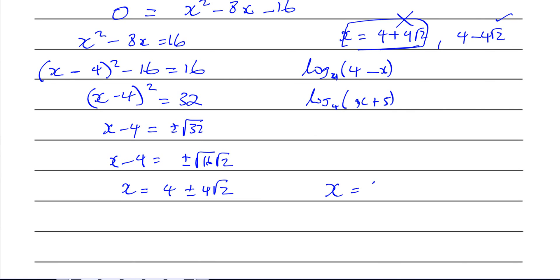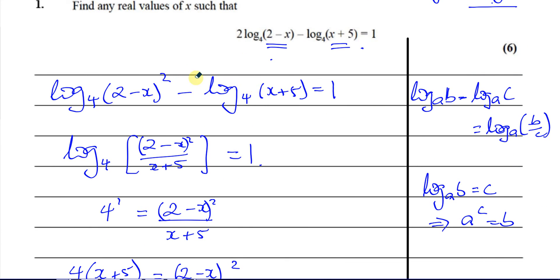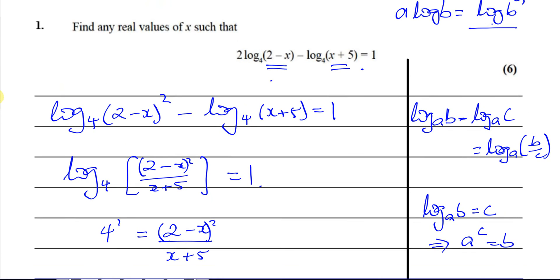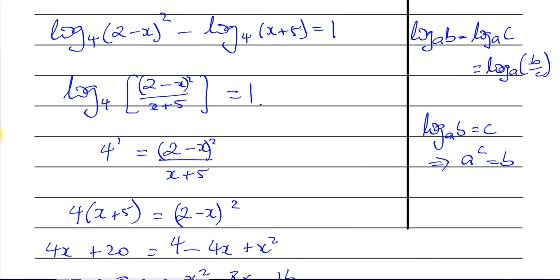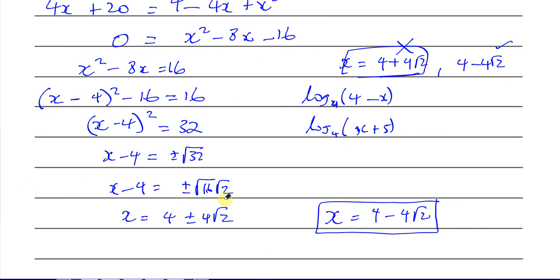Therefore we only choose x equals 4 - 4√2 as our only solution. So when you're dealing with logarithms, always, when you find your final answers, check to see do they cause you to get the log of a negative number. If they do, you can't accept that solution because it won't be a real solution, it will be undefined. So that's something you've got to be really careful about in logs, and there we have the end of that question.